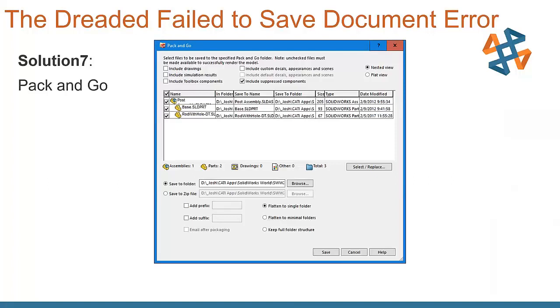SolidWorks Pack and Go, you can save to a new zip folder or to a new zip file or to a new folder, and that will gather up all the parts, assemblies, and drop them into a new location. See if that will gather the files up and allow it to be saved that way.